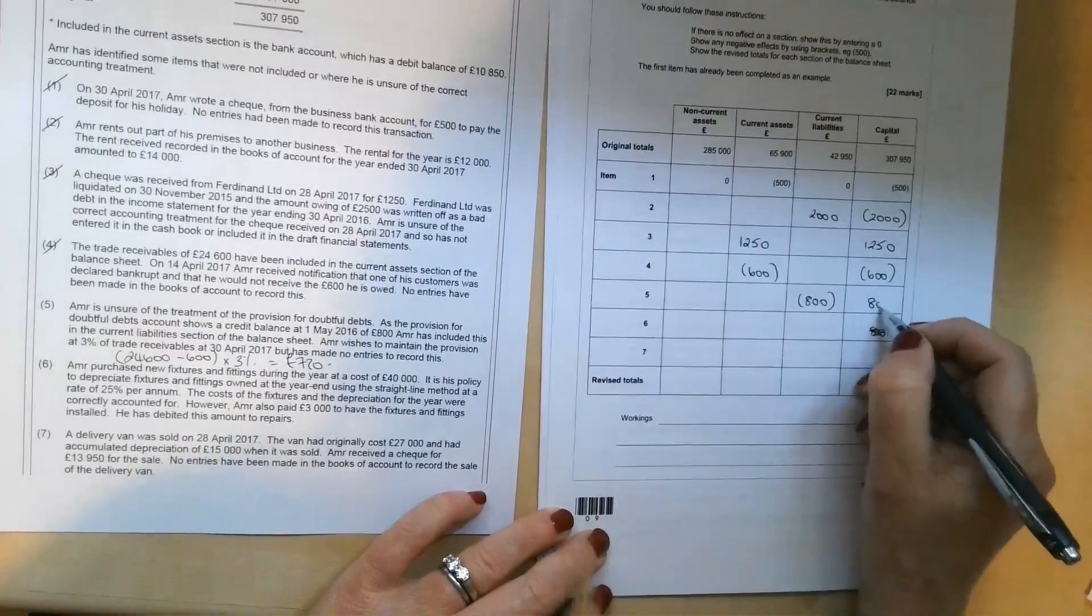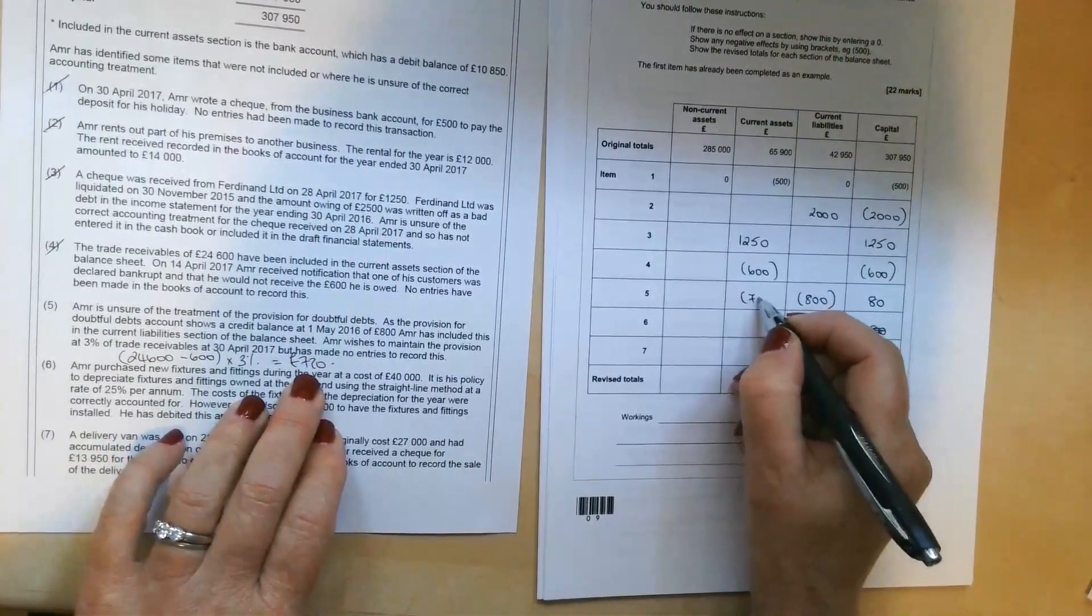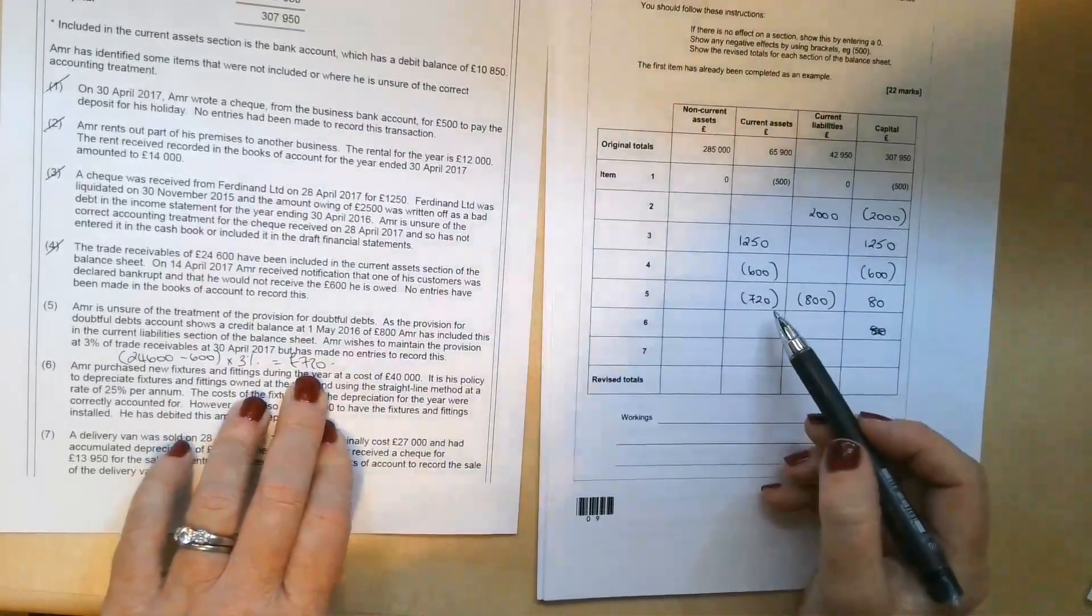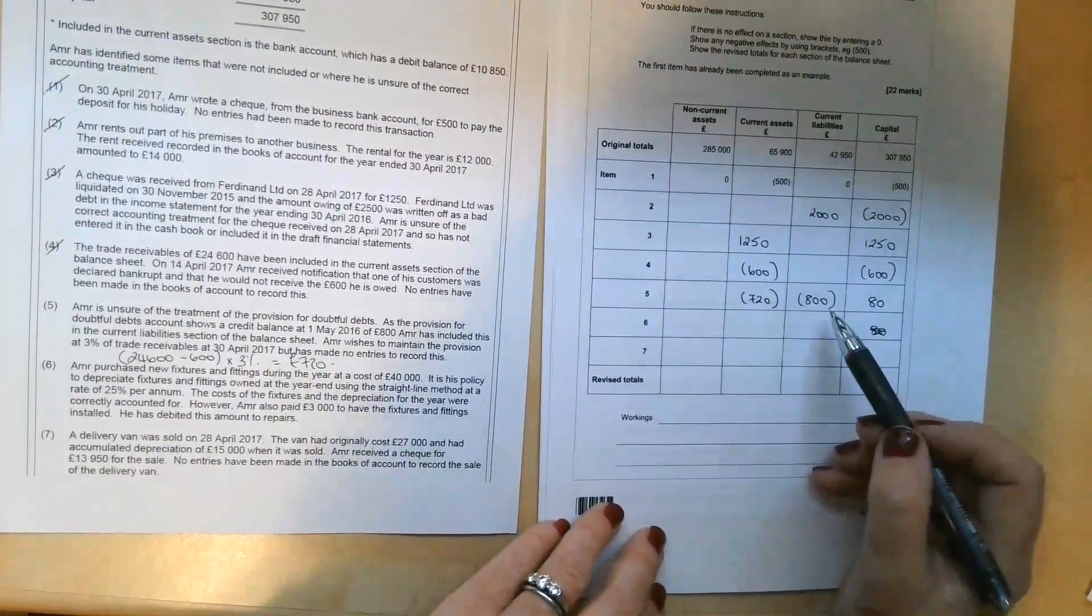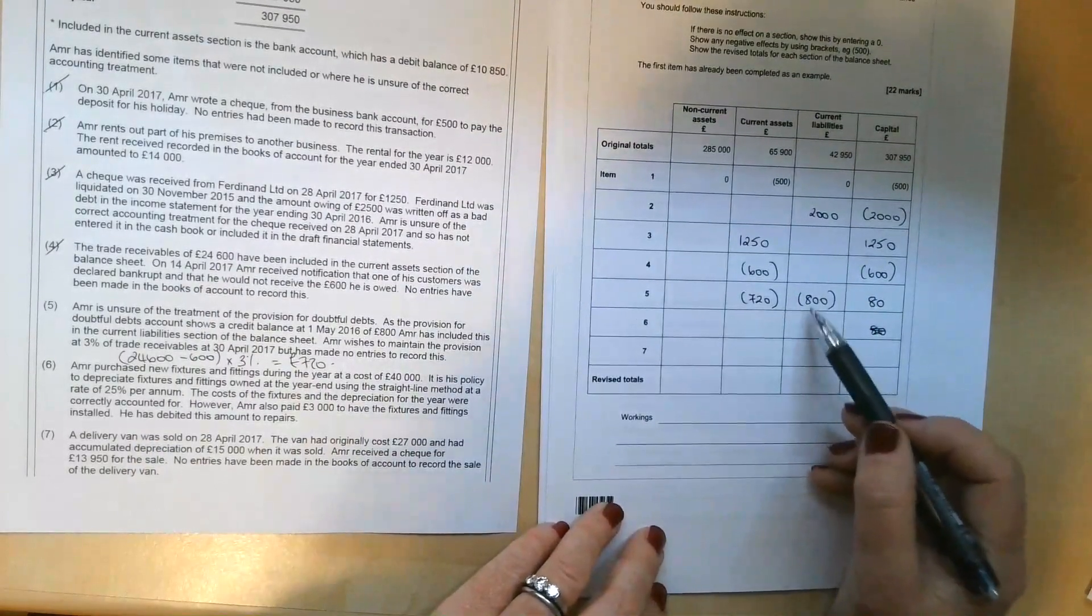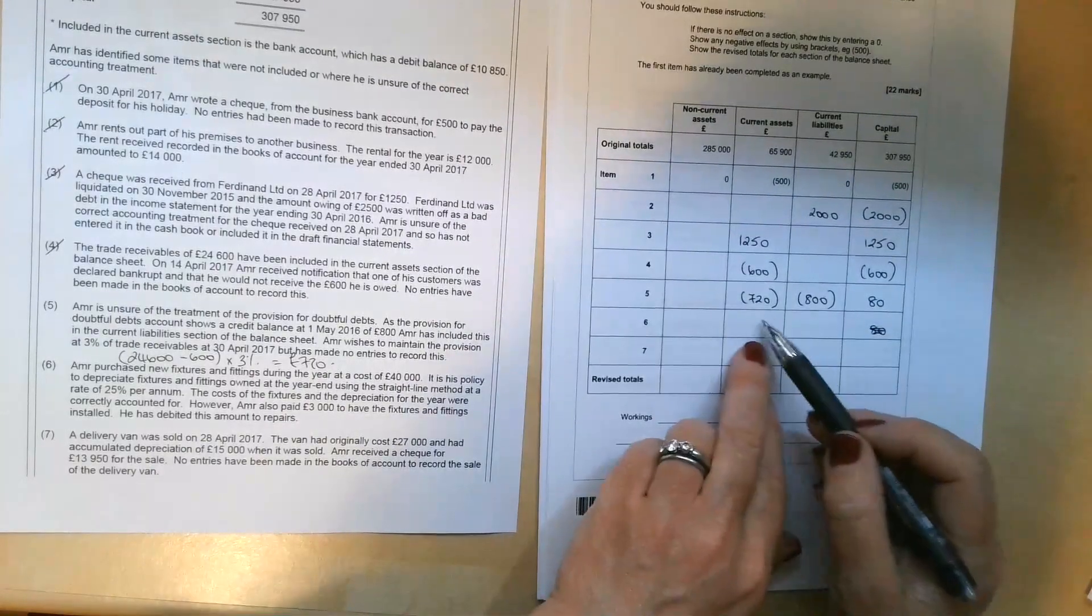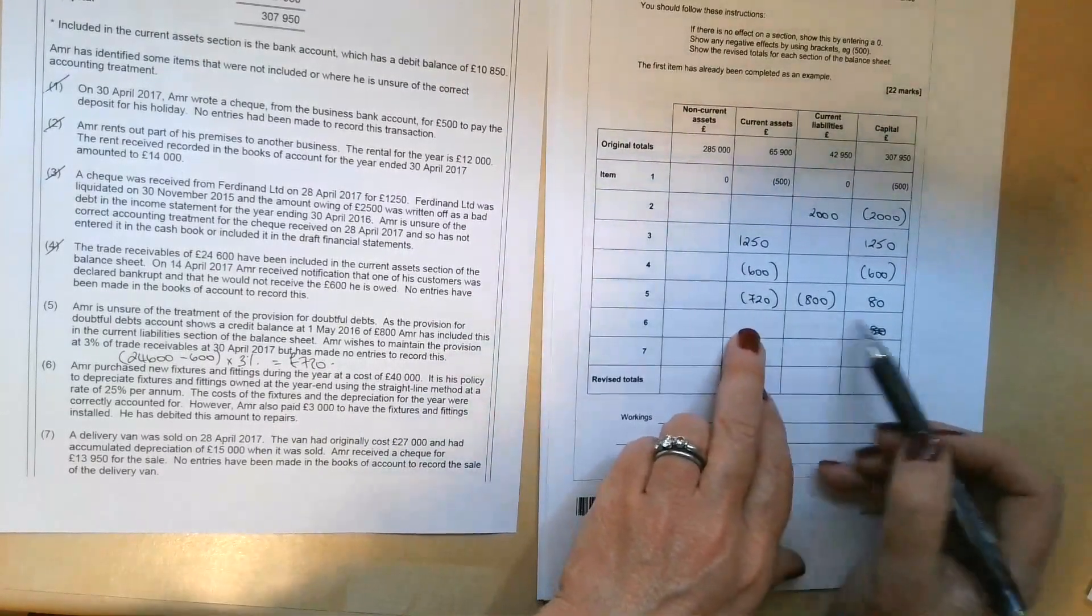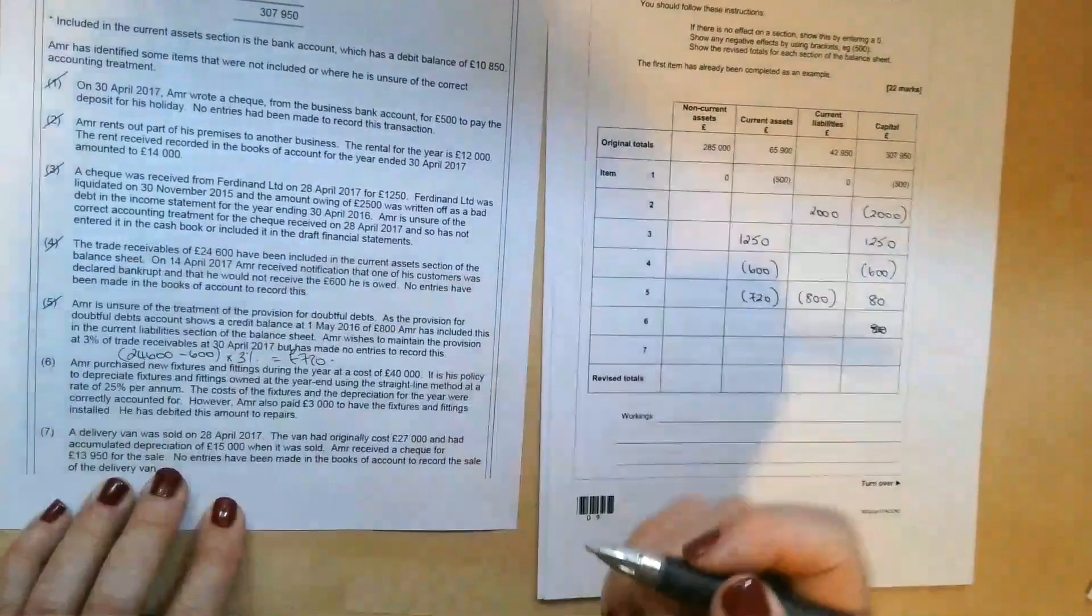Pop that in there, £80. And then the £720 is going to be deducted from the current assets. So we're going to take £720 away from current assets. We've reduced current liabilities by £800. That £800 should never have been there. And then this £80 is the difference between the £800 brought forward and the £720 we need at the end of the year. That's number five sorted out.